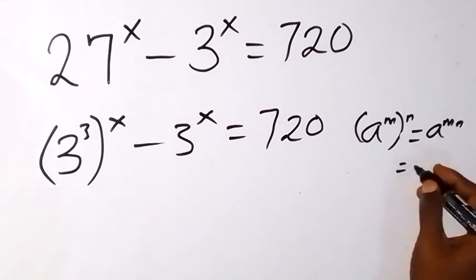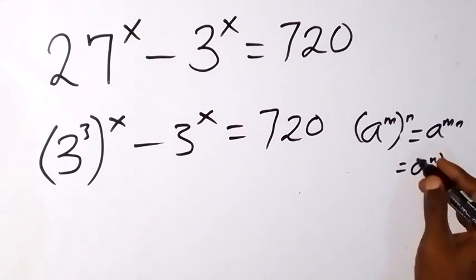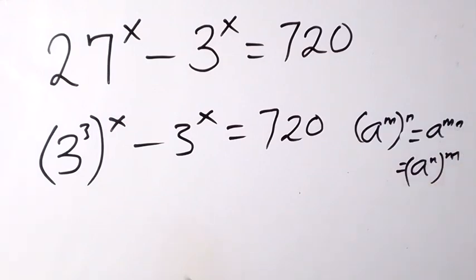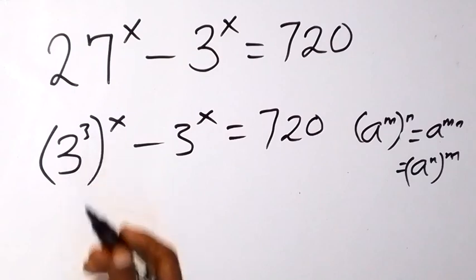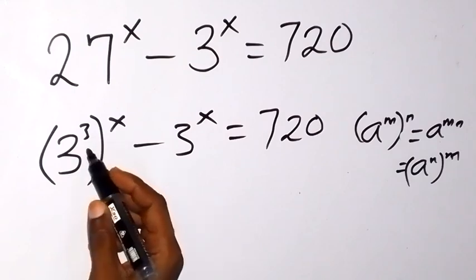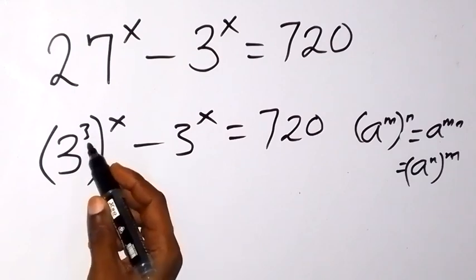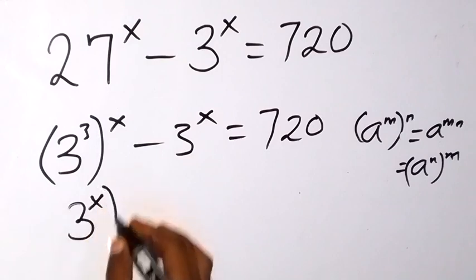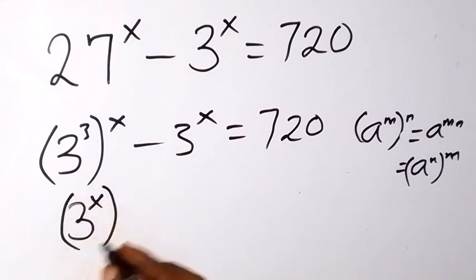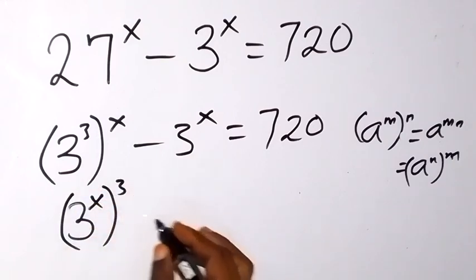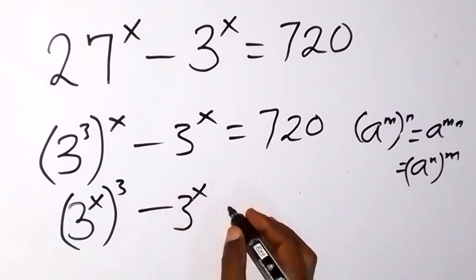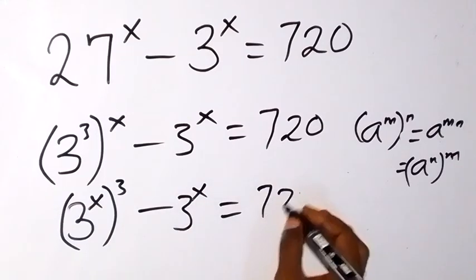It can also be written as a raised to power n, then raised to power m, since they multiply we still get the same thing. When we apply that here, we can take x inside and take 3 outside: we have 3 raised to power x, then raised to power 3, minus 3 raised to power x, equals 720.